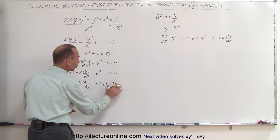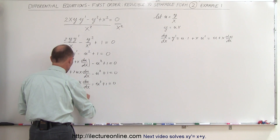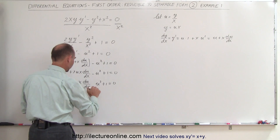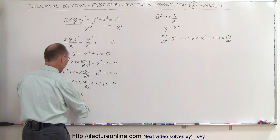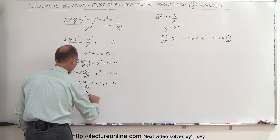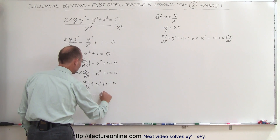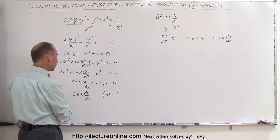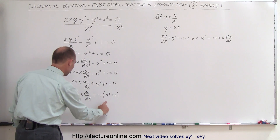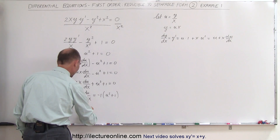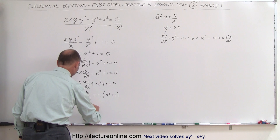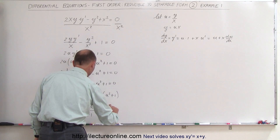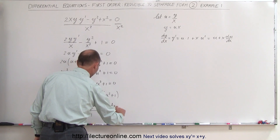The next thing we want to do is move the u squared plus 1 to the other side, so this becomes 2u·du/dx equals negative (u squared plus 1). Then we move the dx over here, move the x down, so we get 2u·du divided by (u squared plus 1) equals negative dx divided by x.